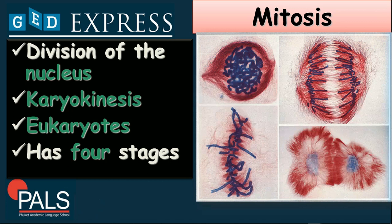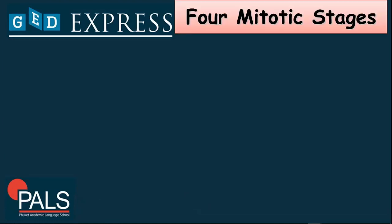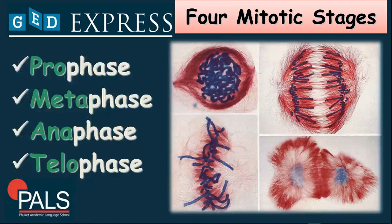For example, we have here this photo, which illustrates the four stages of mitosis. The first picture at the upper left is prophase, and then the other one is metaphase. The one at the bottom left corner would be anaphase. And then the last photo at the bottom right would be telophase. The four mitotic stages are: prophase, metaphase, anaphase, and telophase.